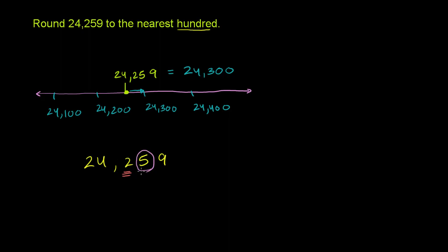This is the hundreds place. So you look at the five right there. And if this number is five or greater, if it's five, six, seven, eight, or nine, you round up. So five or greater, you round up.